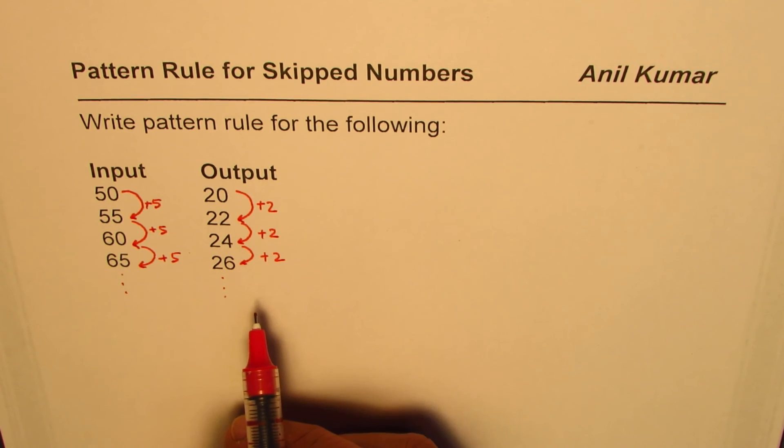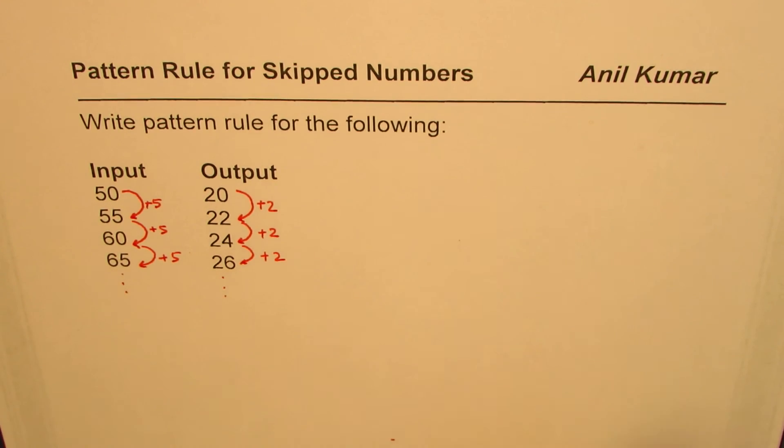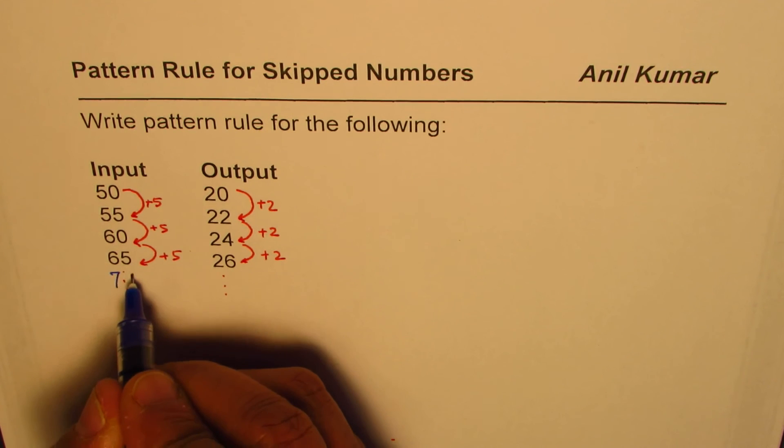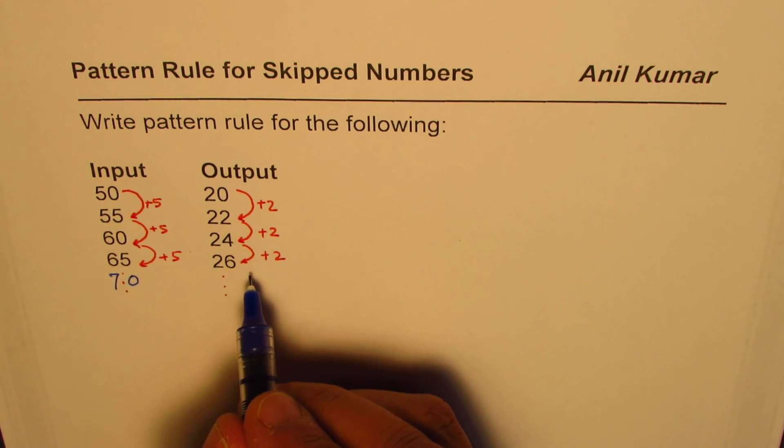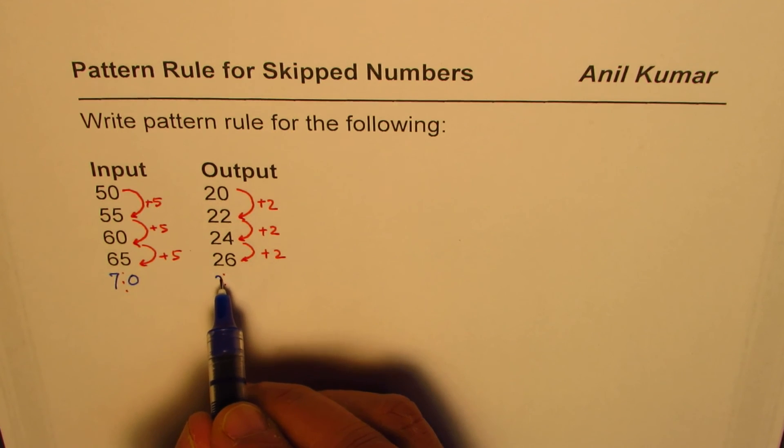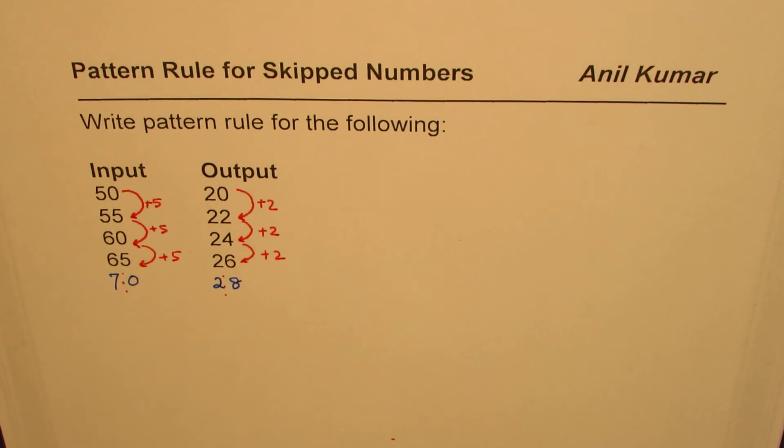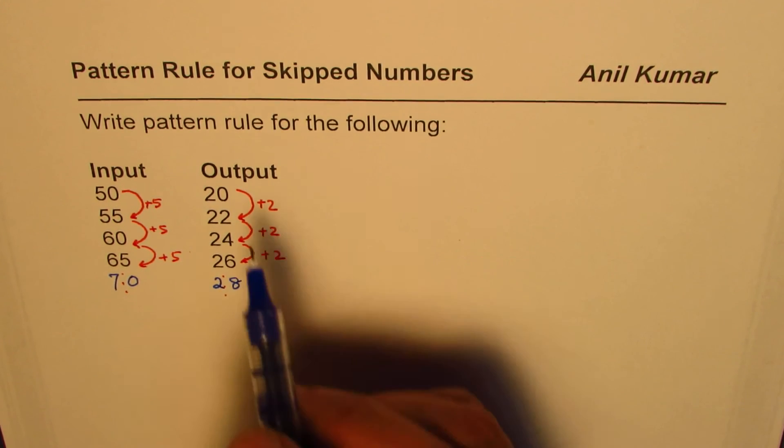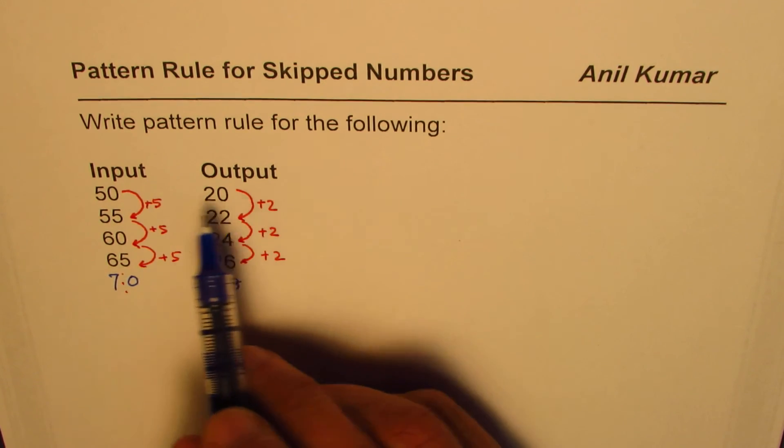The next number, which should be 70 for input, for that if you go with this pattern it should be 2 more than 26, so we expect an output of 28 for input of 70. How do we get it? Well, the answer is like we did for most of our videos on input and output - we see the pattern which relates input and output.